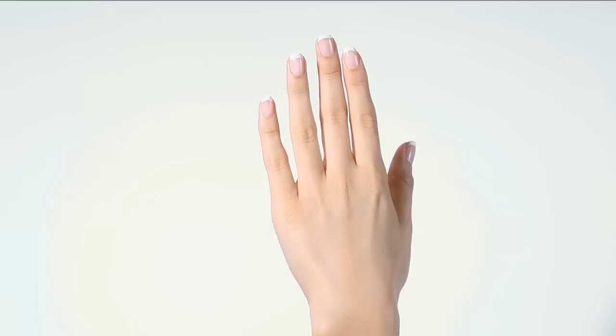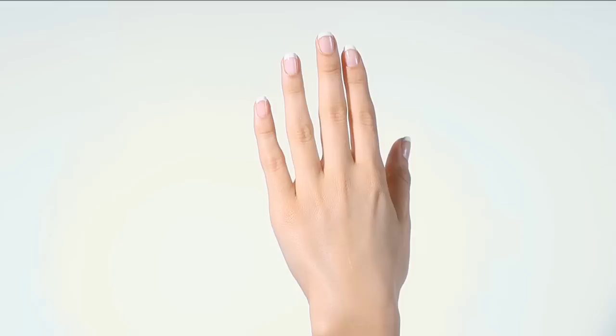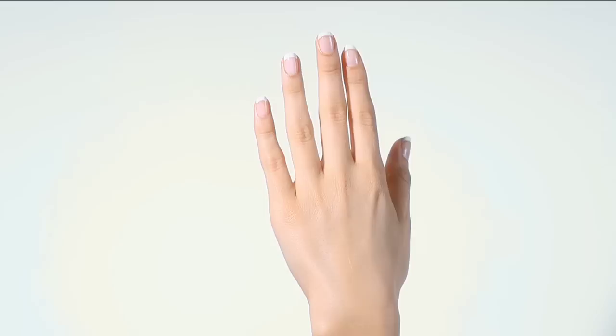Apply the natural nail color over your entire nail. You can use more than one coat if you like for a more opaque look. Allow the natural color to dry and then cover your entire nail with a top coat.